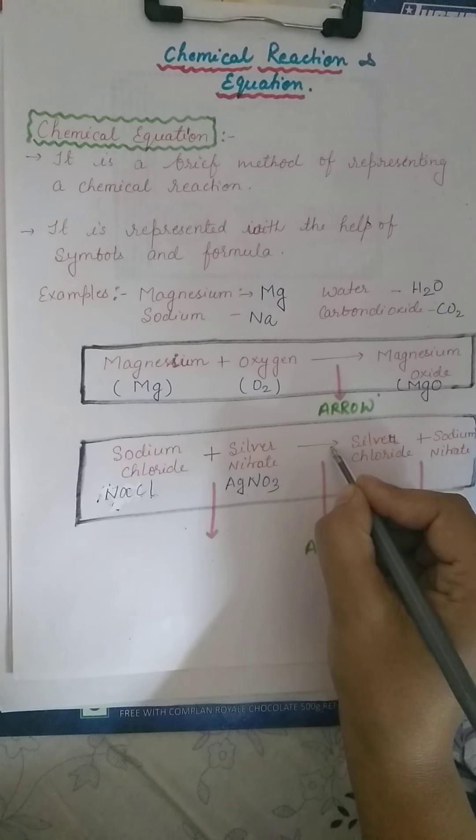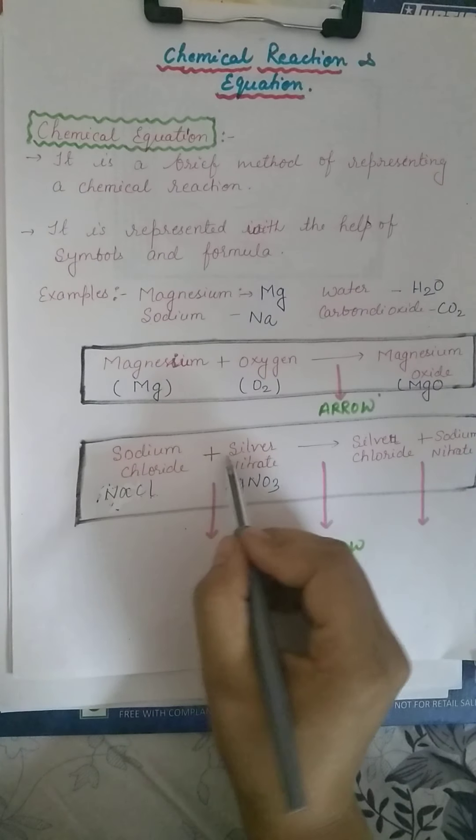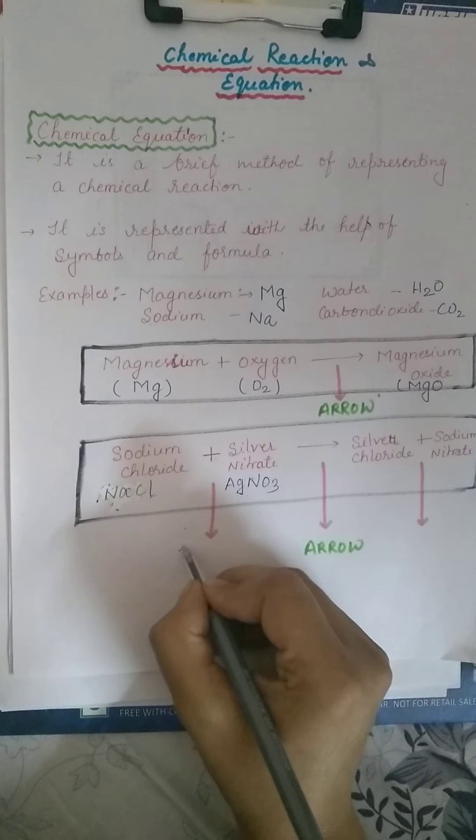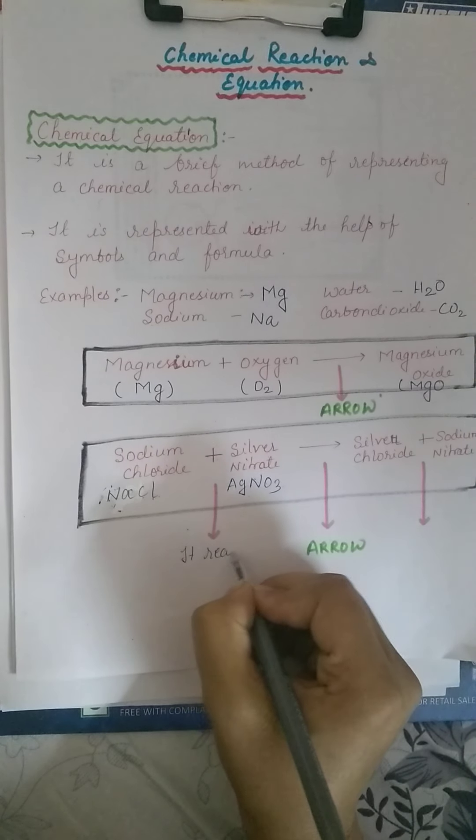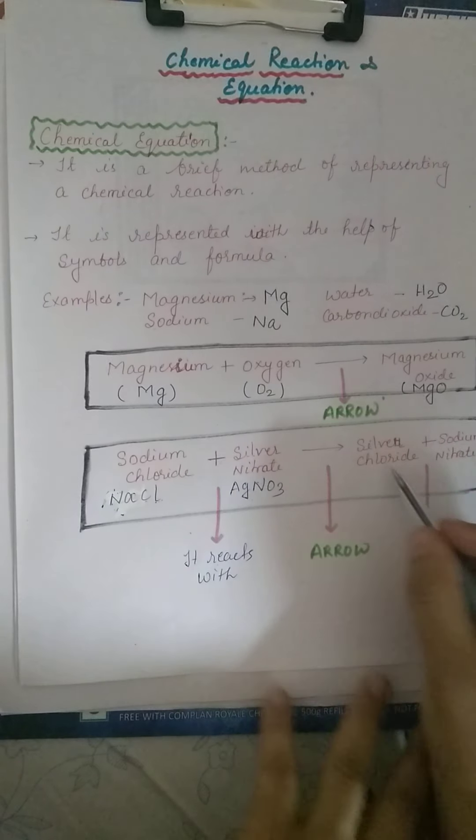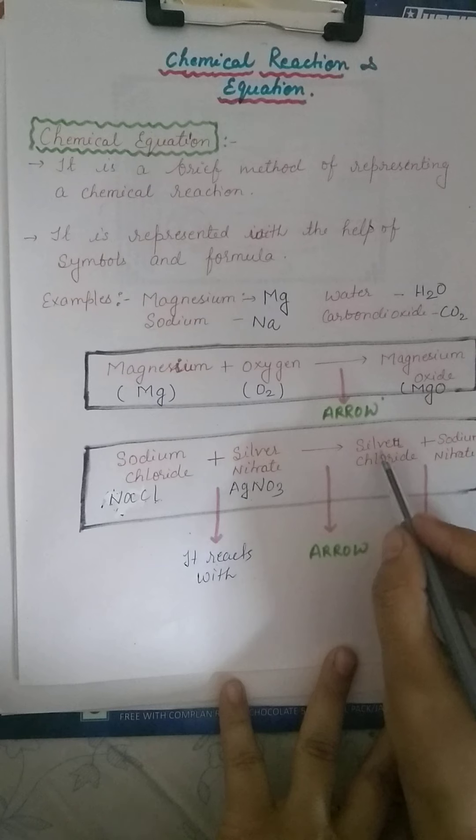Again we will put this arrow sign. Here, this plus sign indicates that it reacts with. The product - we will put this arrow sign. The product we will get is silver chloride.